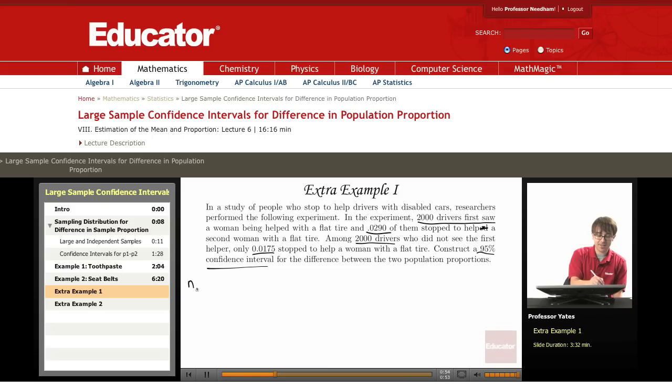My first sample size is 2,000 and the proportion associated with that p1 hat is going to be 0.0290. My second is also 2,000 and I have my second proportion to be 0.0175. Alpha is equal to 0.05 because we're working with the 95% confidence interval. So I have alpha over 2 is 0.025.